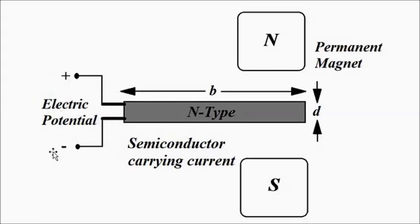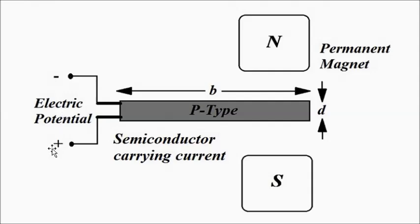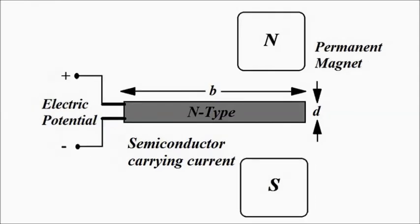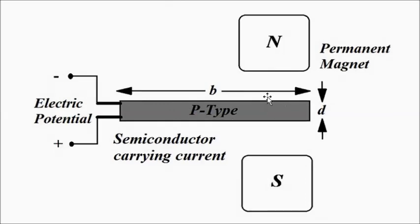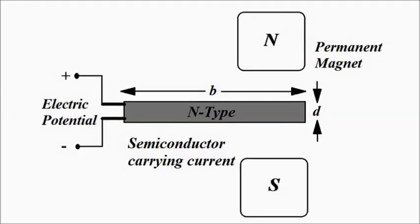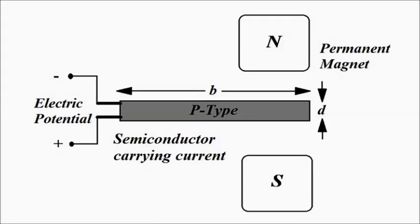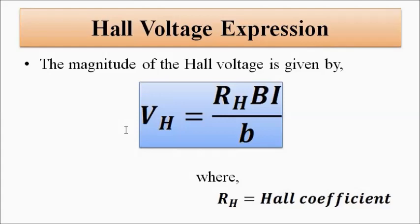So for n-type the polarity is plus/minus, and for p-type it is minus/plus — because the direction of current flow in n-type (due to electrons as majority carriers) is opposite to that in p-type (where holes are the majority carriers). Because of this, the polarity of the induced Hall voltage is opposite for n-type and p-type semiconductors. By noticing the polarity of the induced voltage, we can determine whether it is p-type or n-type.